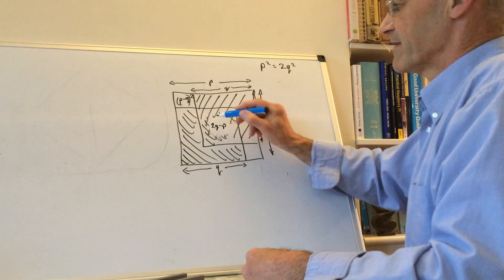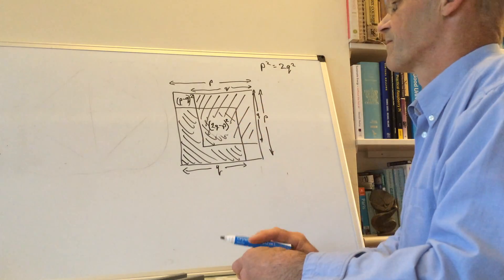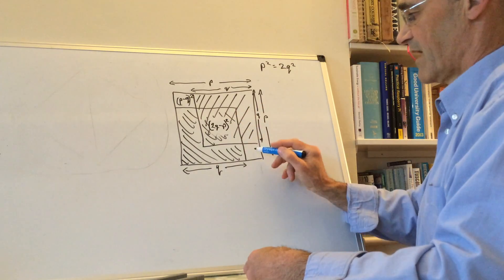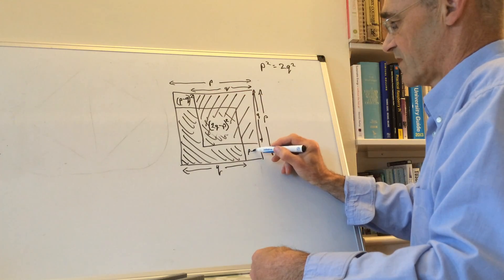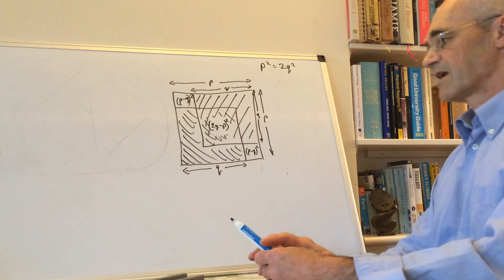Its side, therefore the area is (2q-p)². And then this one here is the same as that one, so that's (p-q)².